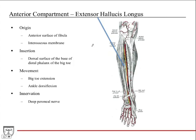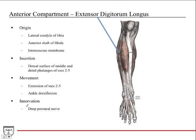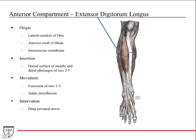The extensor hallucis longus lies deep to tibialis anterior. Its origin is the anterior surface of the fibula and the interosseous membrane. It inserts on the dorsal surface of the base of the distal phalanx of the big toe — hallucis means big toe. Muscles contracting pull the big toe up, producing big toe extension. It also crosses the ankle joint, so it assists with dorsiflexion, though it is not the main dorsiflexor. Innervation is the deep peroneal nerve.